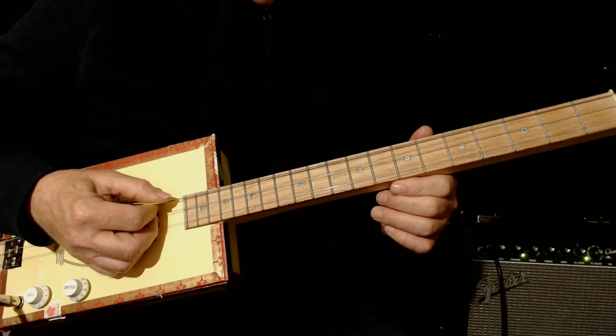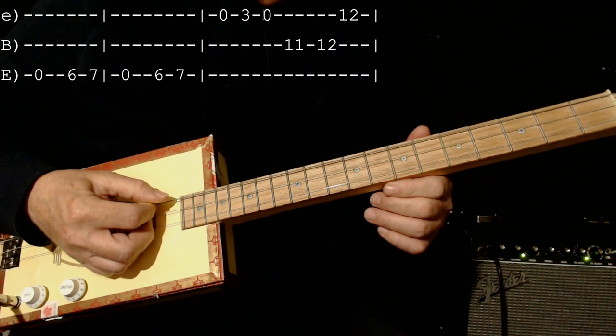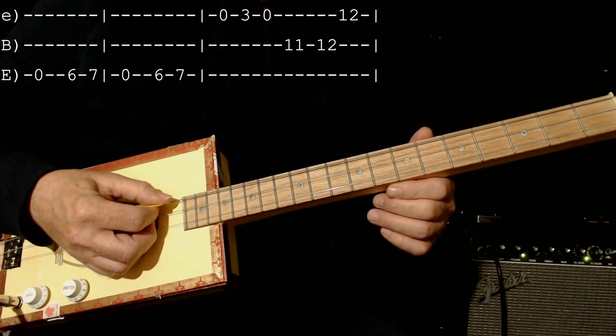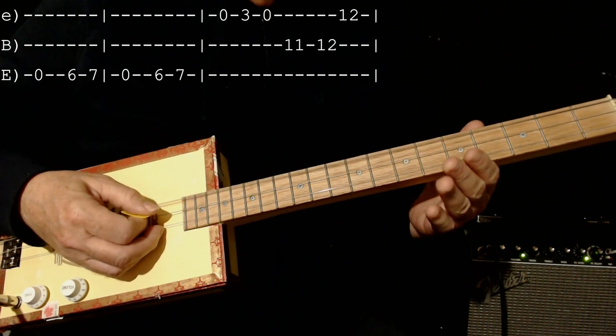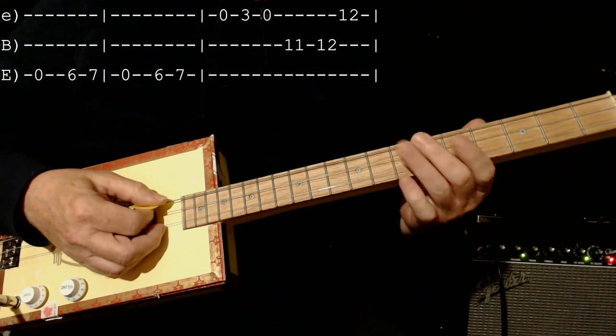And then you can do it whatever way you like. First lick is 0-6-7 on the low string. It does that twice.